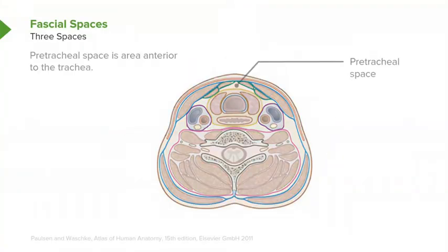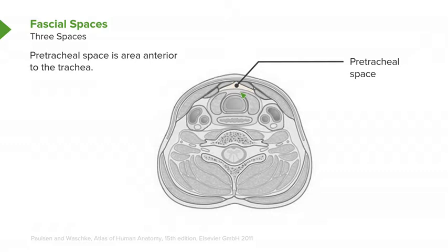First, we have the pretracheal space. The pretracheal space is shown anterior to the visceral compartment, and thus lies anterior to the trachea in this particular view.